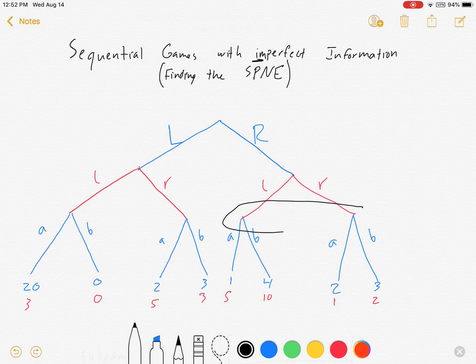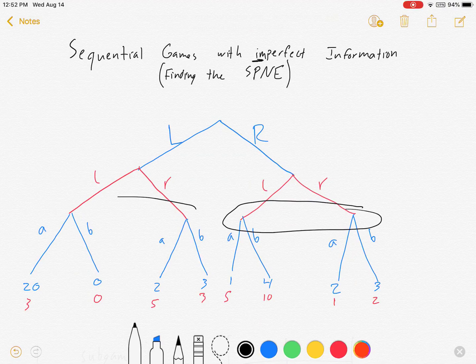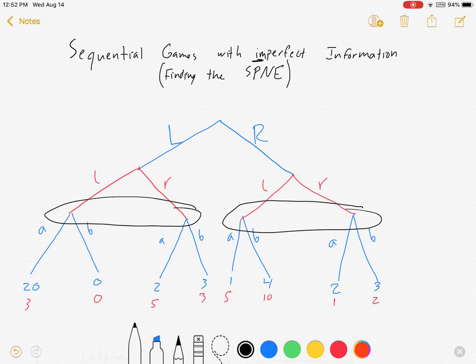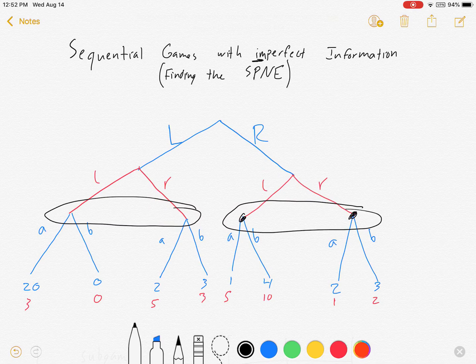There's not perfect information here. And the way we're going to draw that is we're going to put this loop in here. And what this loop says is that the blue player has no idea which of these nodes he's at when he makes the decision.